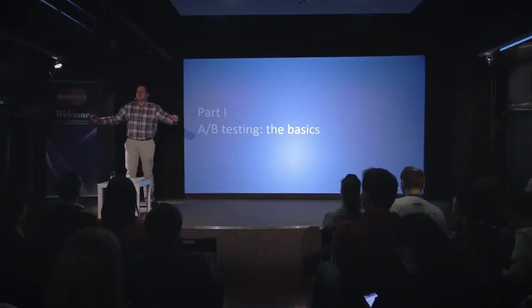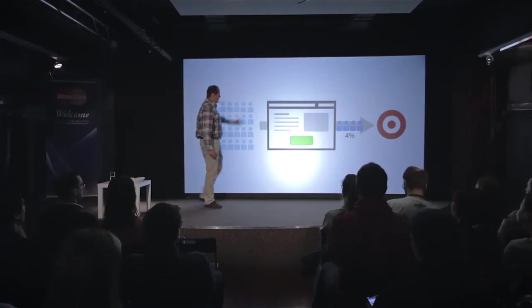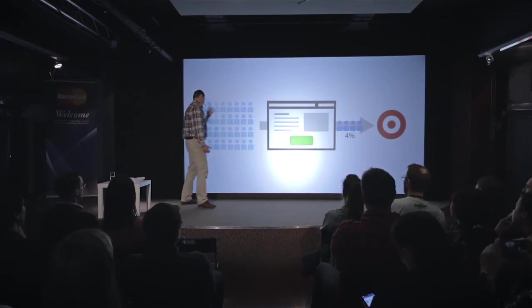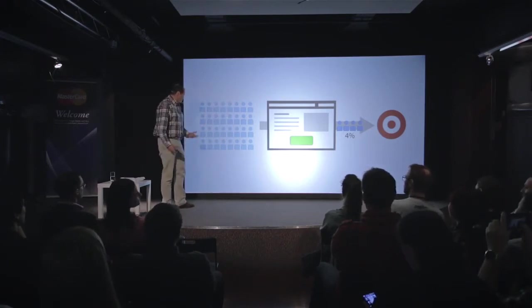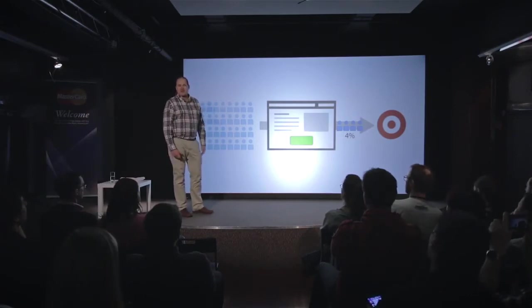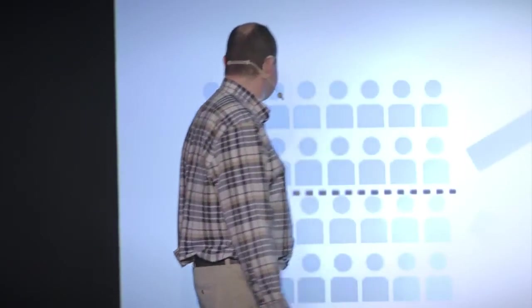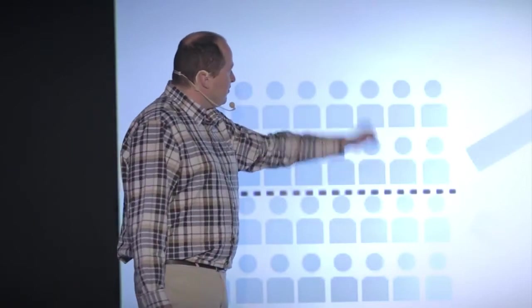I guess everybody knows what A/B testing is. If not, here's a one-minute explanation: if you have a website, hopefully with some visitors, and you have a goal — the number of people reaching that goal is your conversion rate. With A/B testing you make a variation of your page — it can be completely different or just a color change on a button — some people go to version A, others to version B, and after a while you know if your version is a winner or a loser.